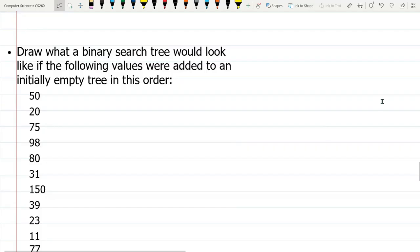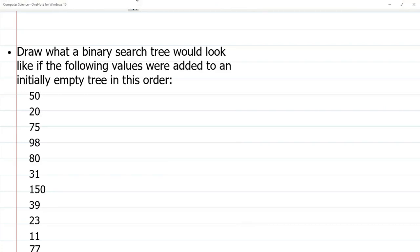We're going to draw a binary search tree created from these values in this order. I'm just going to write the values. I'm not going to write the little circle node.